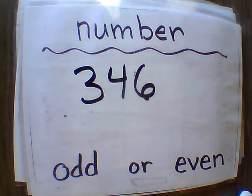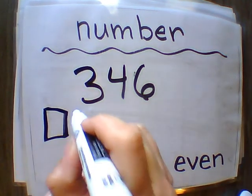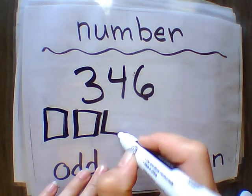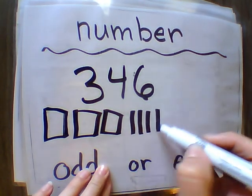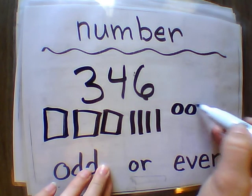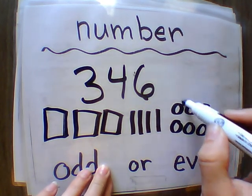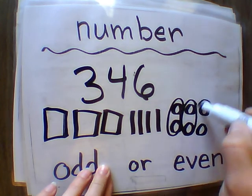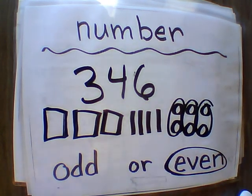All right, so we have our 300, so I'm going to draw three of my hundred cubes. We have four tens and six ones. I'm then going to put them in pairs, and they are even because all of them are in a pair.